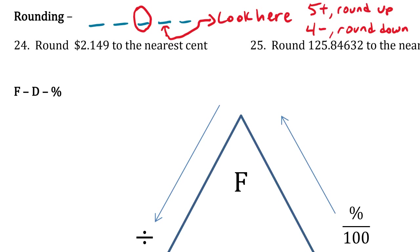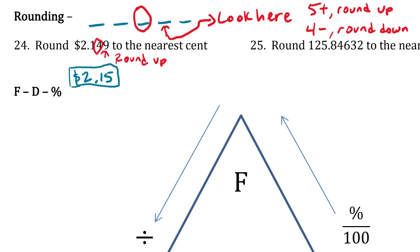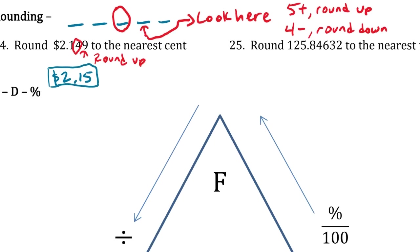Example 24: round $2.149 to the nearest cent. Nearest cent means to the nearest hundredth, so the four is the digit we're rounding. We look at the nine — nine is bigger than five, so we round up. We add one to the four, and it becomes $2.15.